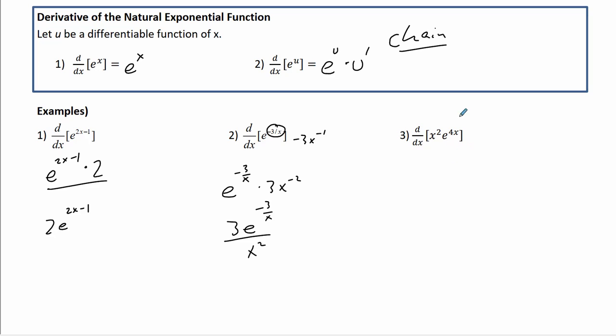And then this one is a product rule. So it's 2x e to the 4x plus x squared e to the 4x times 4. So it's 2x e to the 4x plus 4x squared e to the 4x. I don't want to take anything like terms out. That's not a big deal. We're going to leave it that way. That's fine.